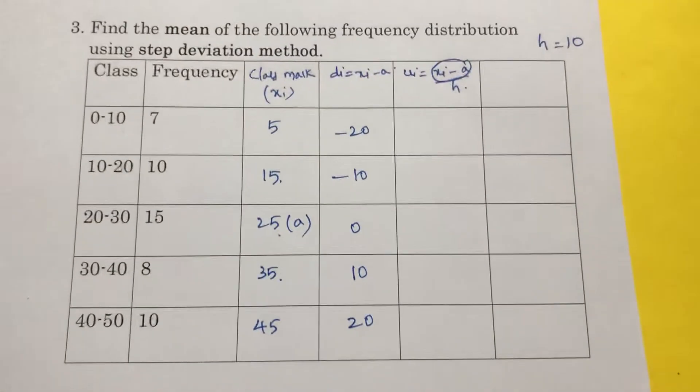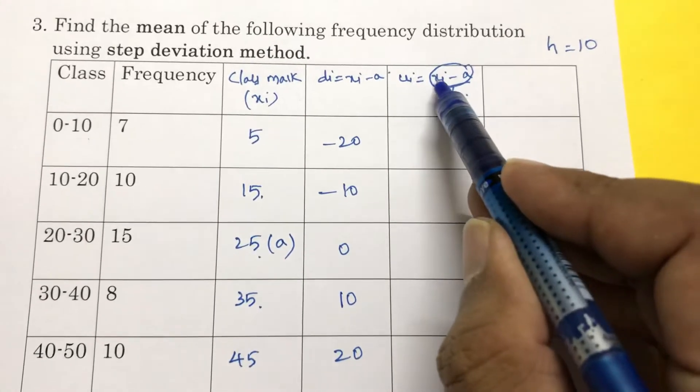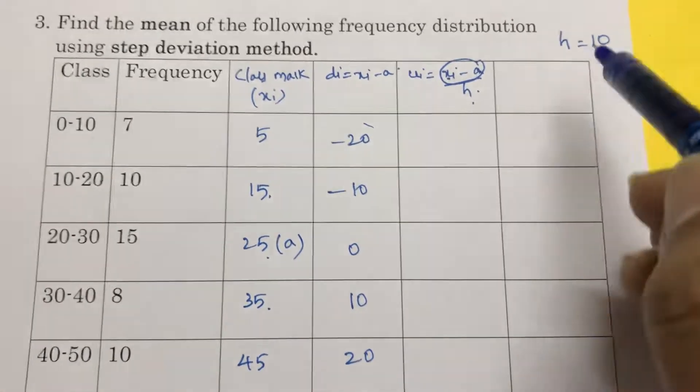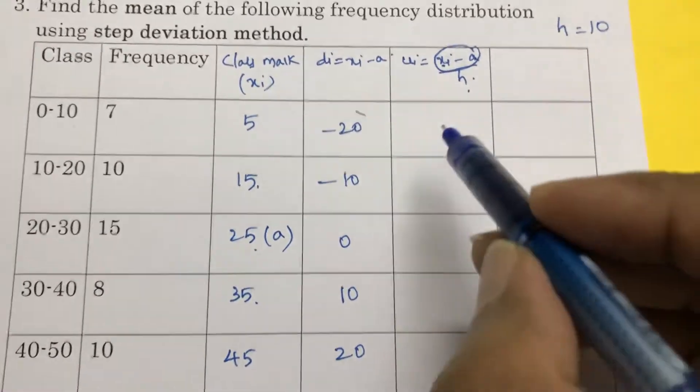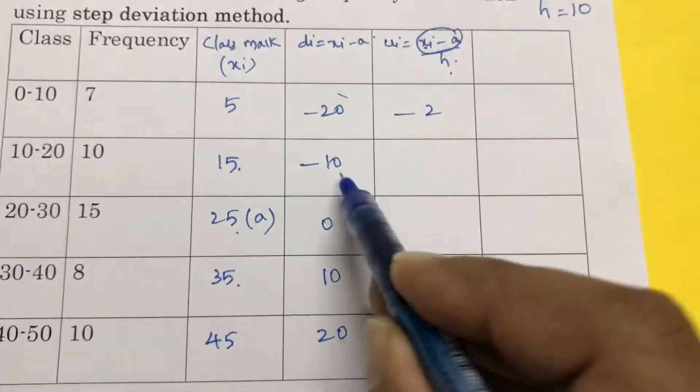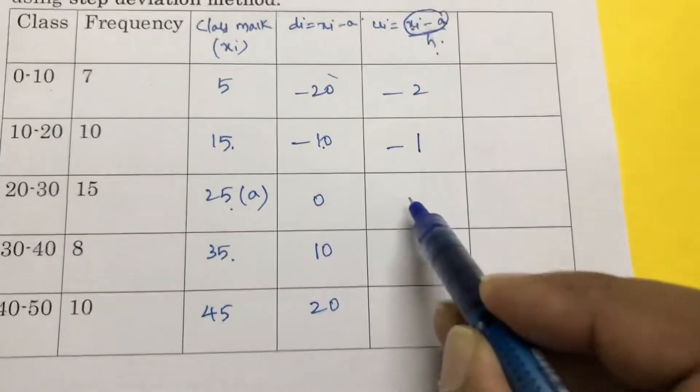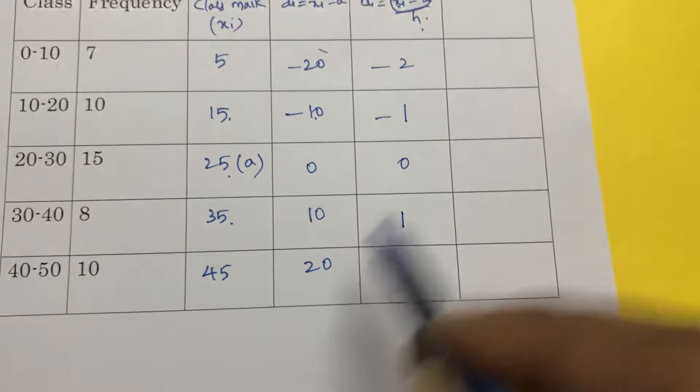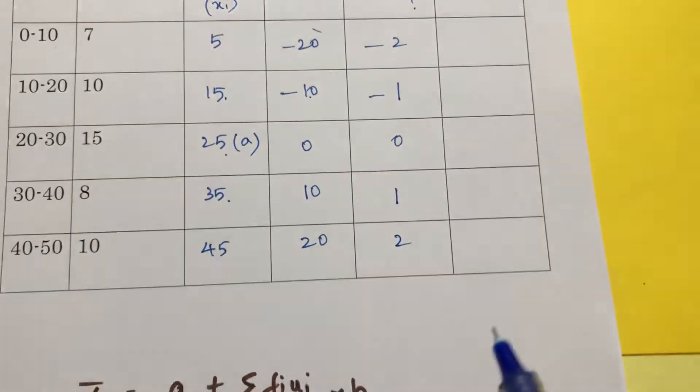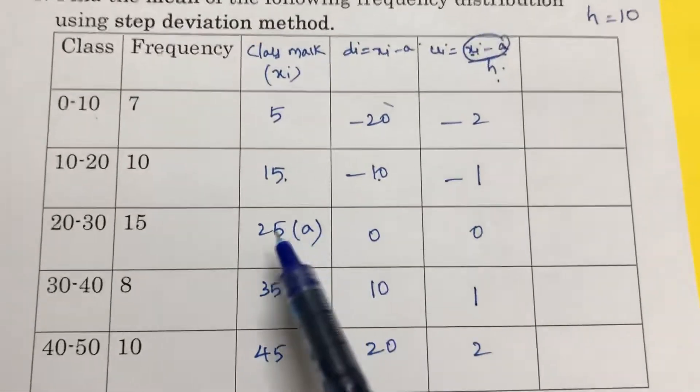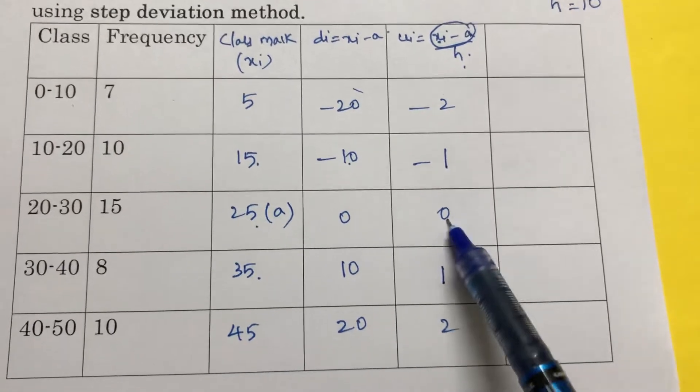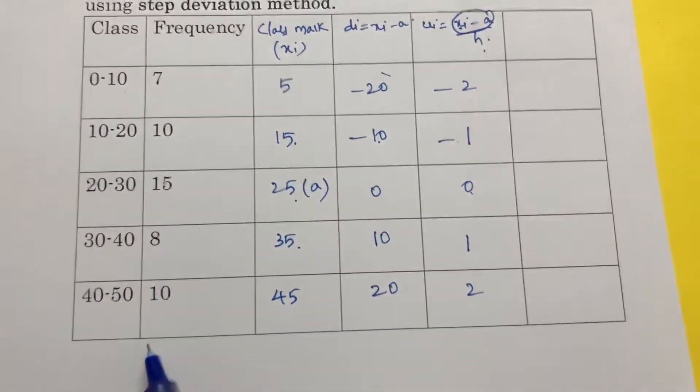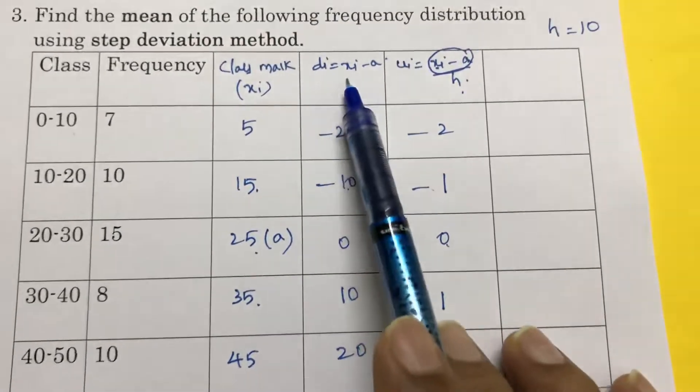Now ui is xi minus a by h. Already you calculated xi minus a by h. That is minus 20 by 10 is minus 2; minus 10 by 10, minus 1; 0 by 10 is 0; 10 by 10, 1; 20 by 10, 2. But my advice is wherever you will assume a, beside that you can write 0, minus 1, minus 2, 1, 2 if the classes are in ascending order. Otherwise just calculate di, xi minus a. ui is xi minus a by h.